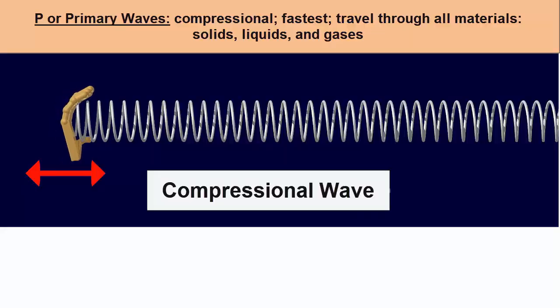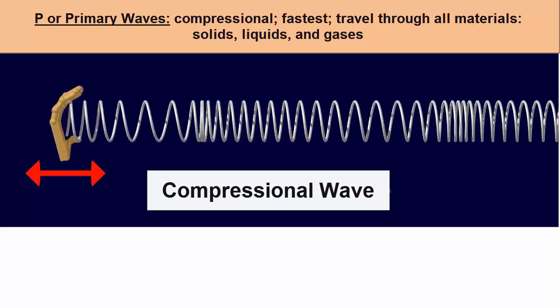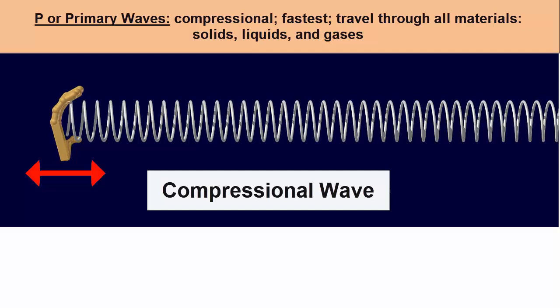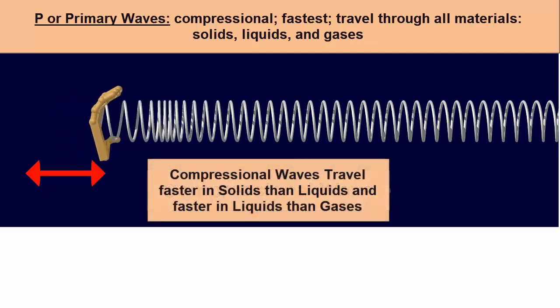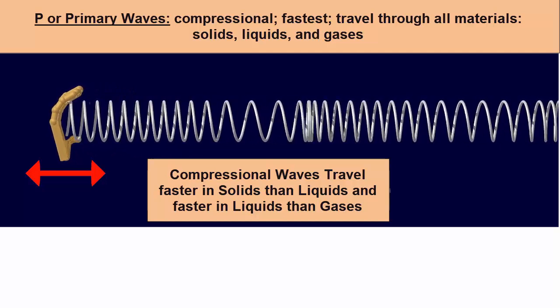We also know that P waves, which are compressional, can travel through all materials, solids, liquids, and gases. However, since solids are more rigid than liquids, and liquids more rigid than gases, they will travel faster through solids, slower through liquids, and slowest through gases.